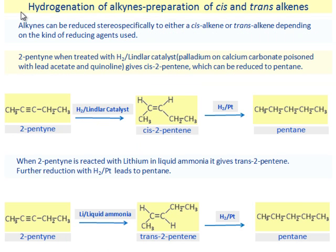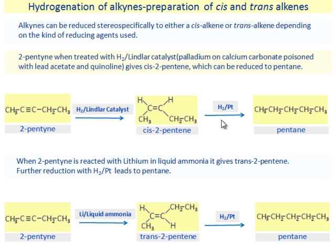Hydrogenation of alkynes — Preparation of cis and trans alkenes. Alkynes can be reduced stereospecifically to either a cis alkene or a trans alkene depending upon the kind of reducing agent used. 2-Pentyne, when treated with hydrogen and Lindlar's catalyst, gives cis-2-pentene, which can be further reduced to pentane. When 2-pentyne is reacted with lithium in liquid ammonia, it gives trans-2-pentene, which upon further reduction with hydrogen and platinum leads to pentane.